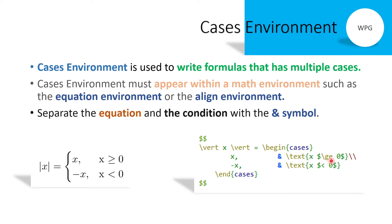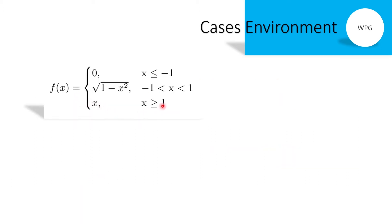To start a new case, terminate the line with the line break command, then write the second condition: minus x, ampersand symbol, and the text condition x less than zero. Since all conditions are written, a final line break command is not needed. In this way the equation can be written as |x| equals x when x is greater than or equal to zero, and |x| equals minus x when x is less than zero.